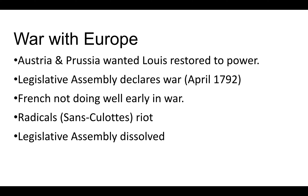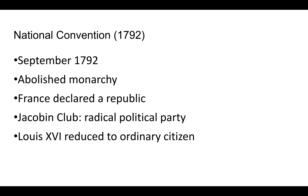At first the war is not going well for the French — they are in chaos and the military is weak. In the midst of this war with Austria and Prussia, the radical sans-culottes begin rioting in France, in Paris, and it forces the Legislative Assembly to dissolve itself and break apart. In its place comes a new representative body known as the National Convention.